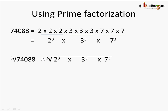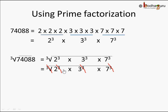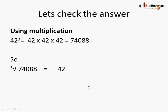So 74088 is nothing but 2 cubed into 3 cubed into 7 cubed. Hence its cube root: the cube root of 74088 is the cube root of 2 cubed into 3 cubed into 7 cubed. Each number has a cube, so we cancel them out, and we are left with 2 into 3 into 7. That's 6 into 7, which is 42. So the cube root of 74088 is 42. We can verify: 42 into 42 into 42 equals 74088. Hence, cube root of 74088 is 42. Bye bye!